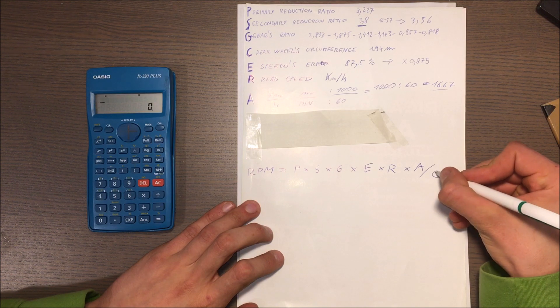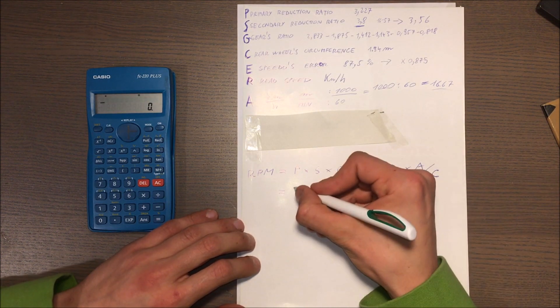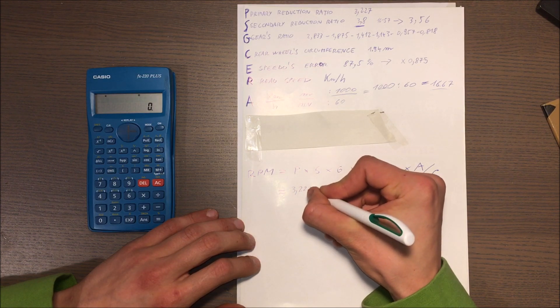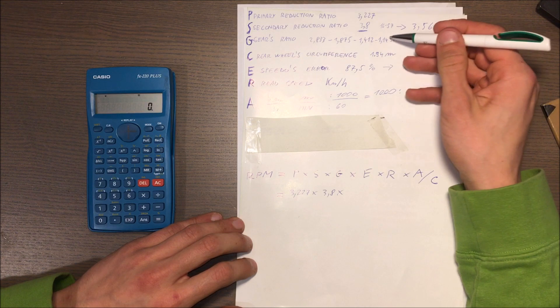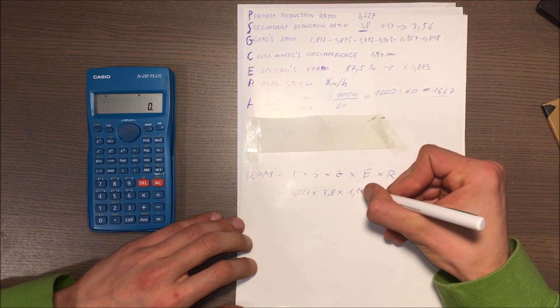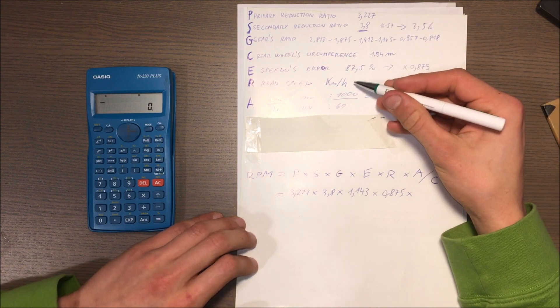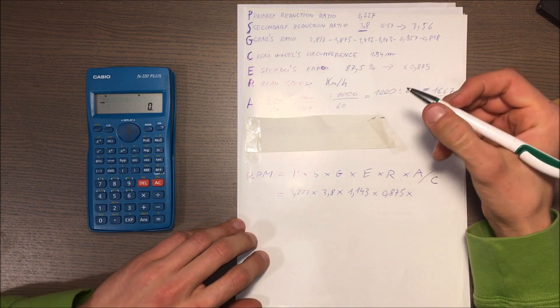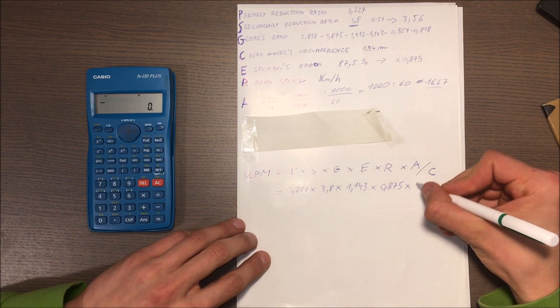So it is pretty easy. The RPM is P times S times G times E times R times A divided by C. That's it. Let's make an example. Primary 3.3, gears ratio, let's say we are in fourth gear, so 1.143.